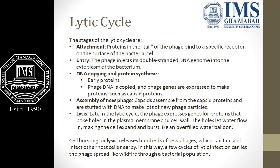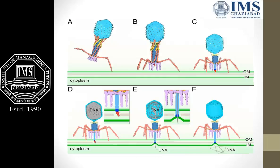After cell bursting or lysis, 100 to 200 progeny virions are released from the bacterial cell and get ready to infect other host cells nearby. In this way, a few cycles of bacterial infection can let the phage spread like wildfire through a bacterial population. This is how the lytic cycle occurs.